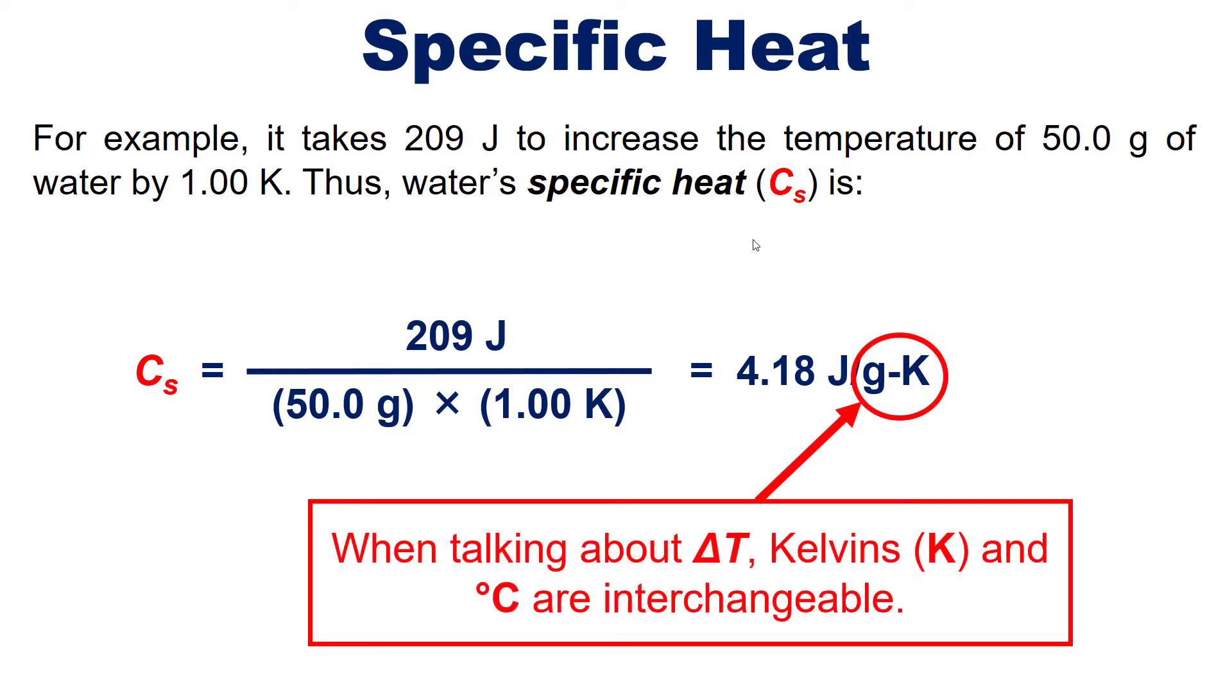I emphasize that the size of a degree celsius and the size of a kelvin is the same, though their absolute values are different. This means that when you're talking about a delta T, or change in temperature, kelvins and degrees celsius are interchangeable. Now, that is not true if you're just talking about the raw absolute temperature. But if you're talking about delta T, you can swap those out all you like.